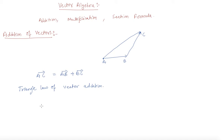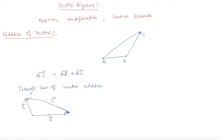Let me give you one more example. Let us say vector A is in one direction and vector B is in another direction. And if I want to find out a vector from the head of A to the head of B — let us say this is vector C — then vector C will be minus A plus B, or you can also rewrite it as B minus A vector.